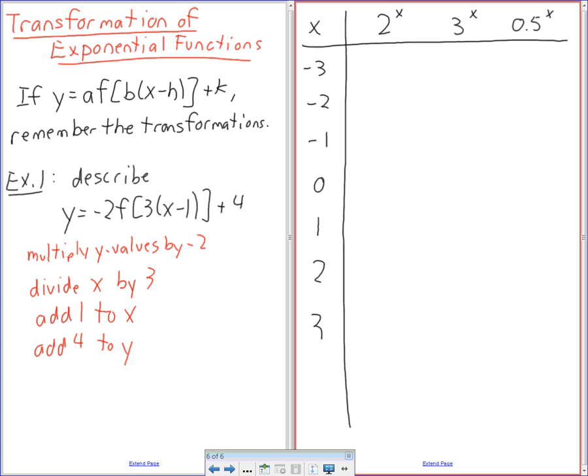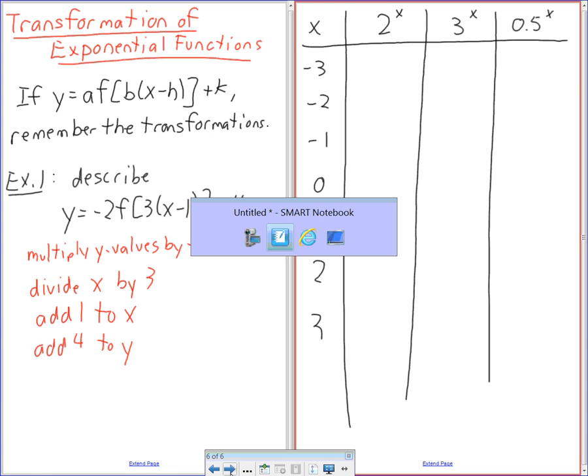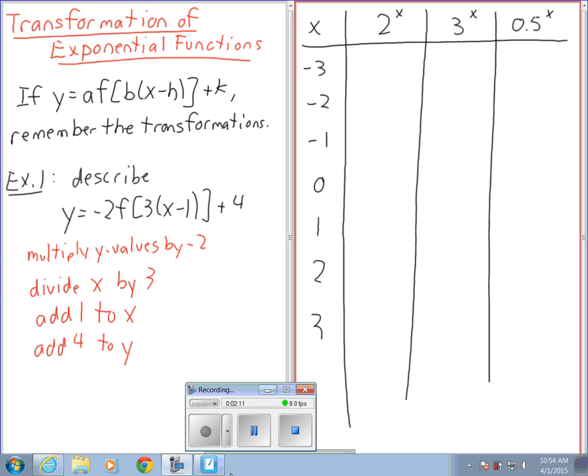What I want you to do for me is to use the values negative 3, negative 2, negative 1, 0, 1, 2, 3. And just whatever your row is, if you're an A, you'll be doing 2 to the x. If you're a B, you'll be doing 3 to the x. And if you're C, you'll be doing 0.5 to the x. We'll fill in the whole chart for everybody here, but you don't need to calculate them all. So I'm going to hit pause for 60 seconds or so.